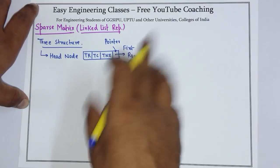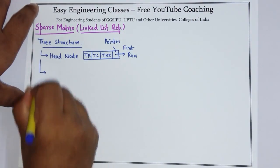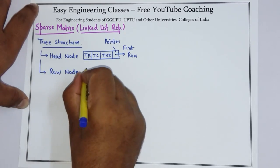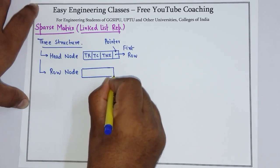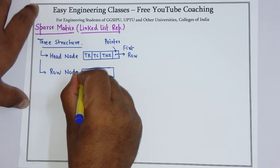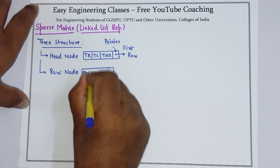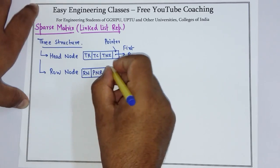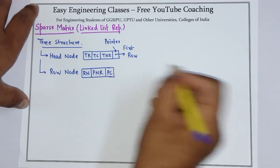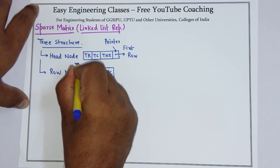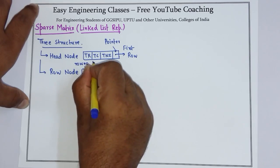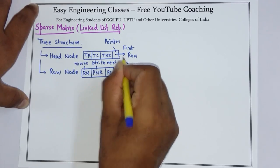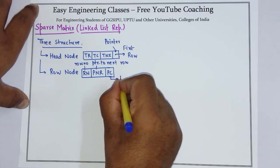Then we have the row node. The row node contains three pieces of information: first is the row number, then a pointer to the next row, and a pointer to the column. So this is the row number, this is the pointer to the next row, and PC is the pointer to the column.